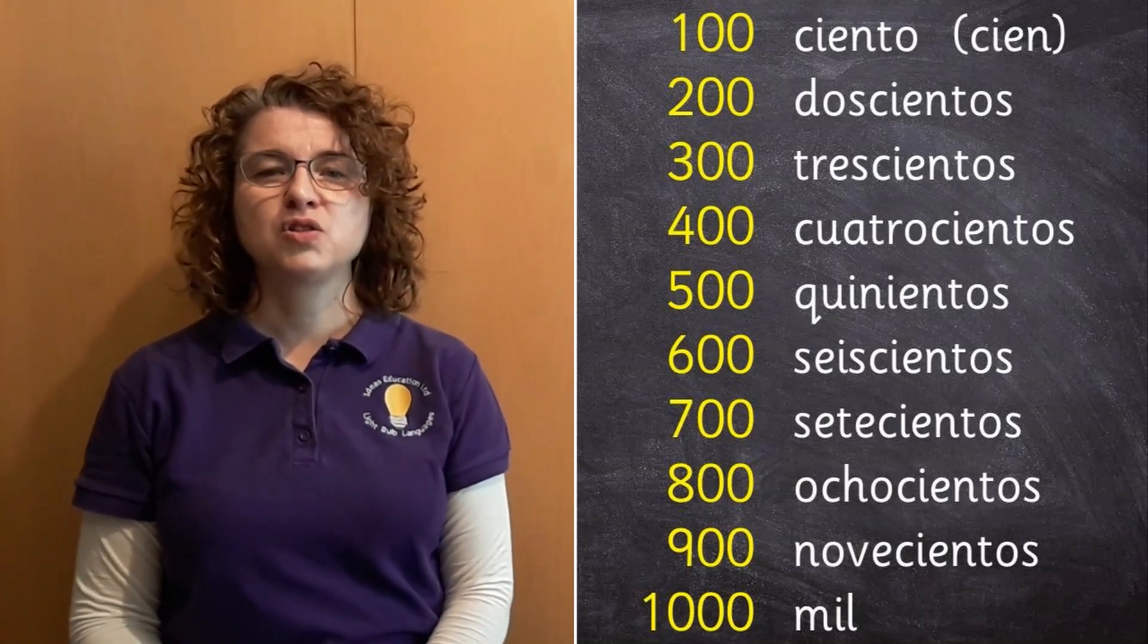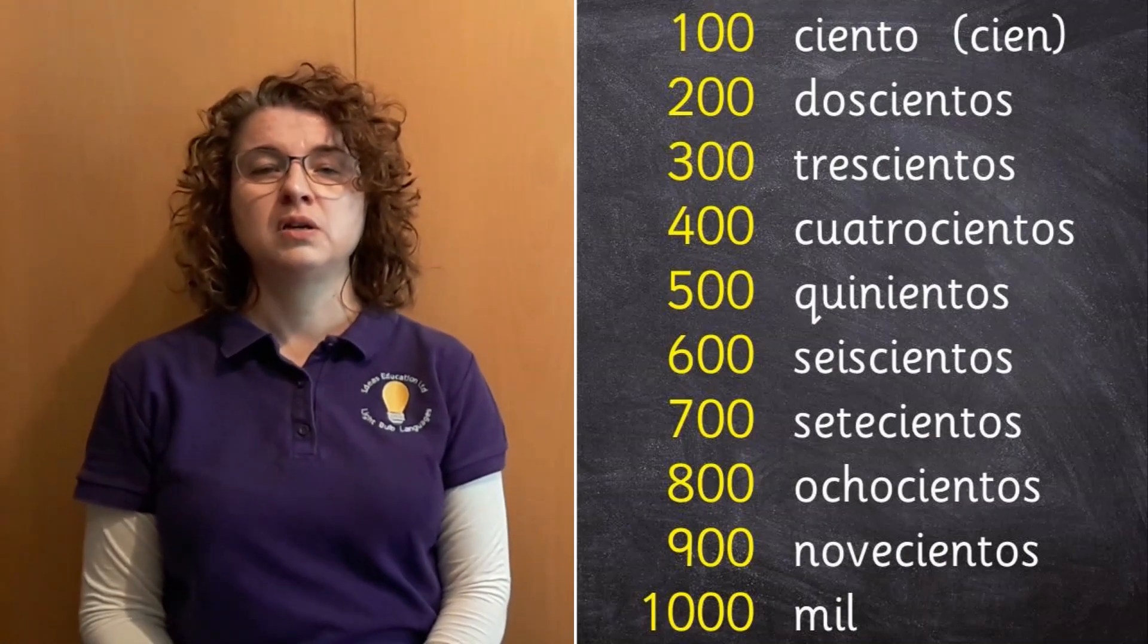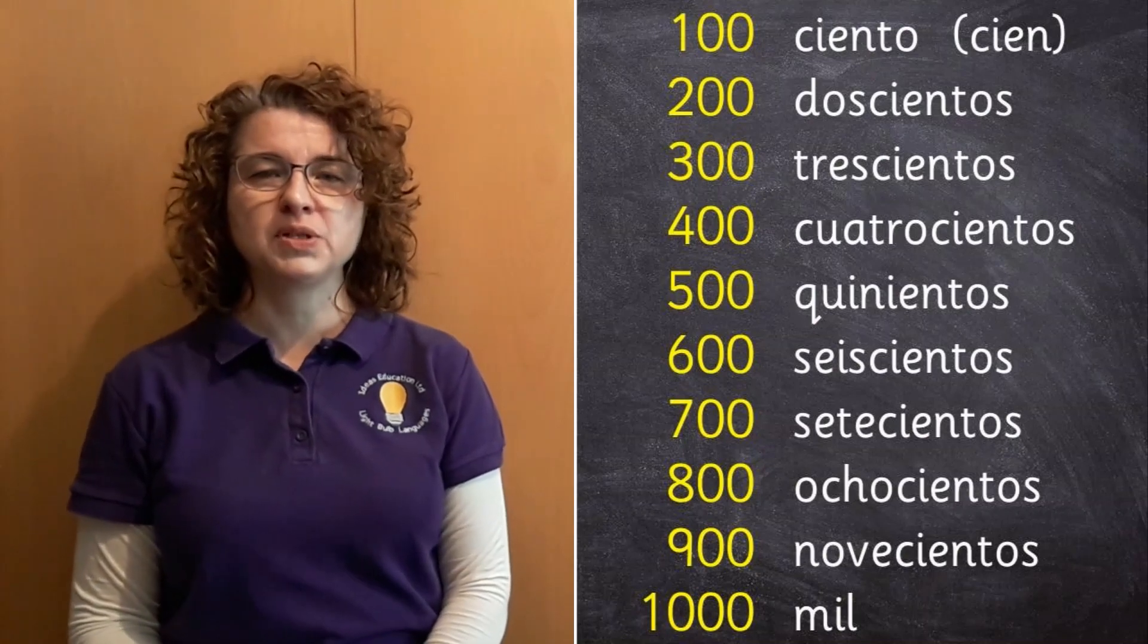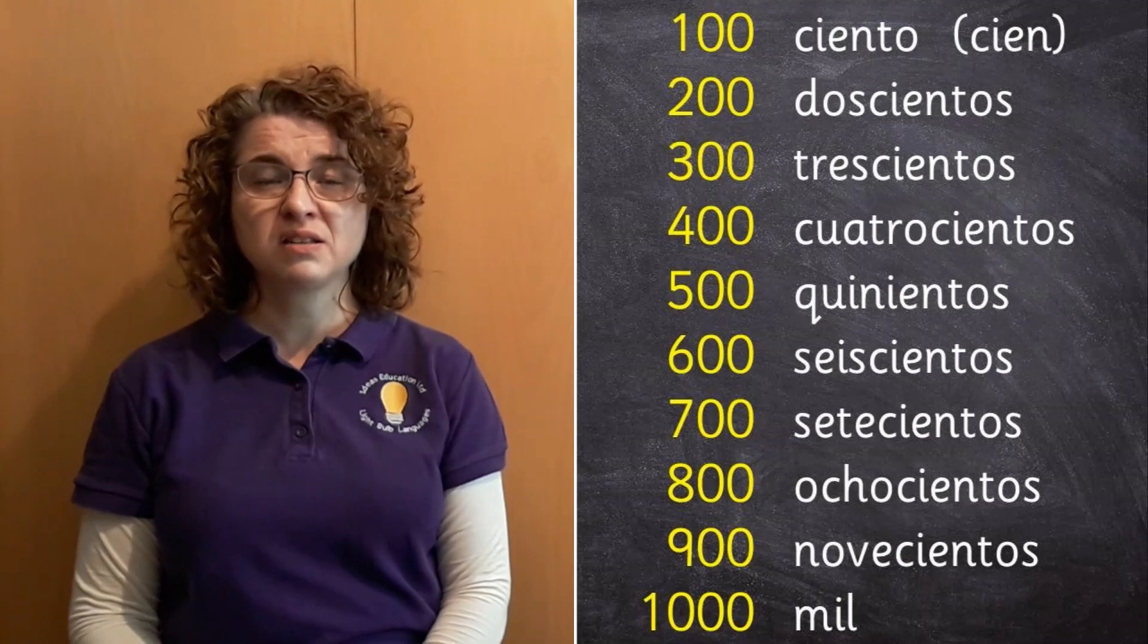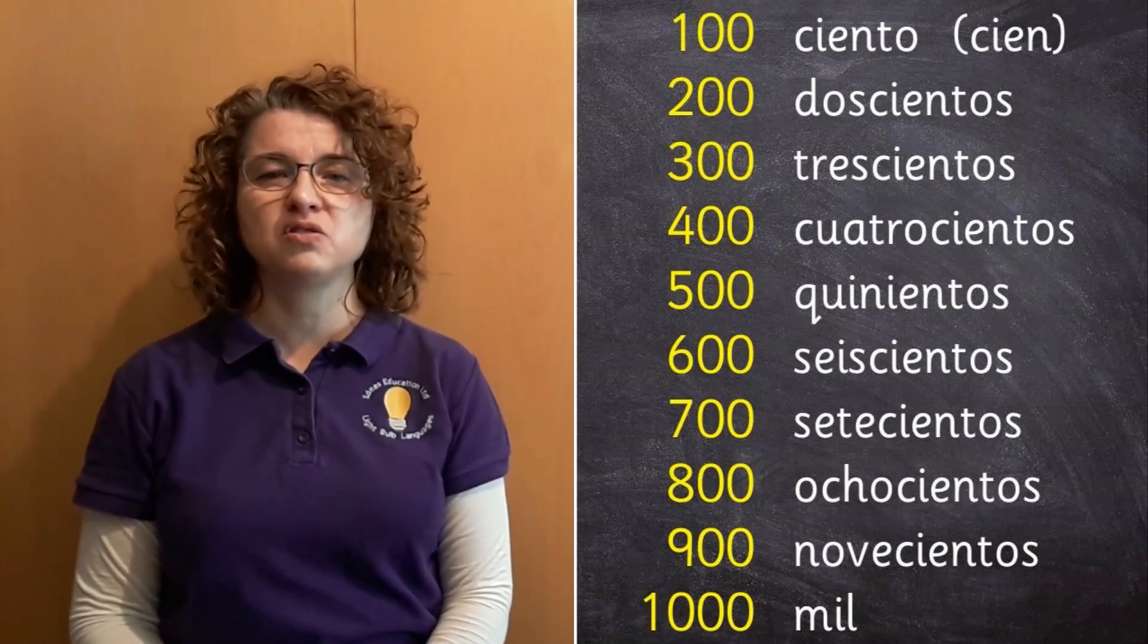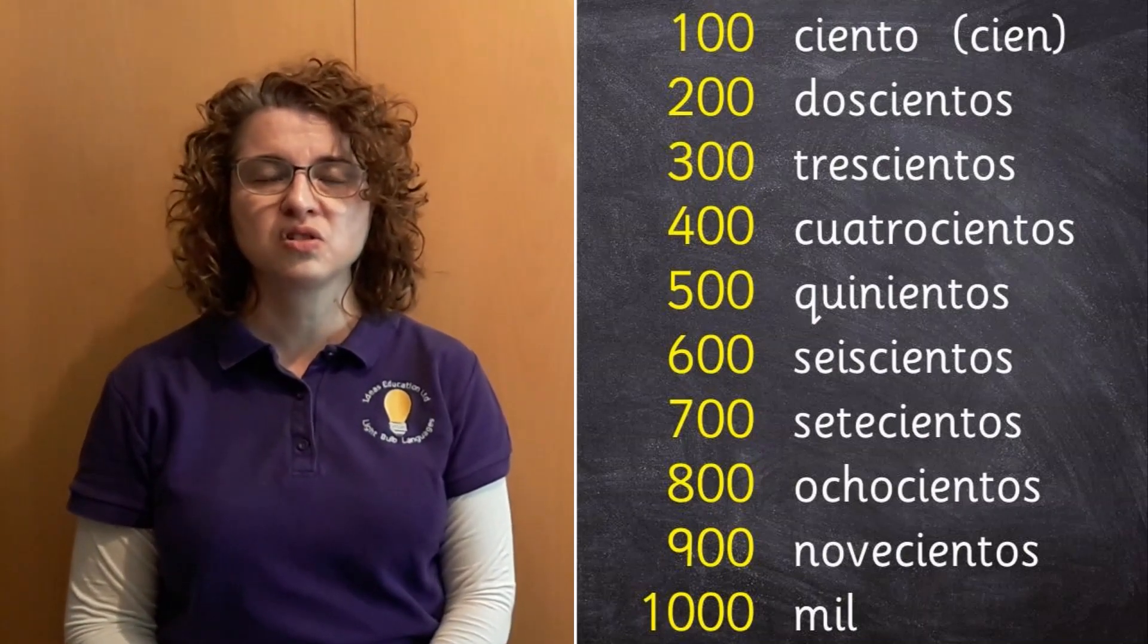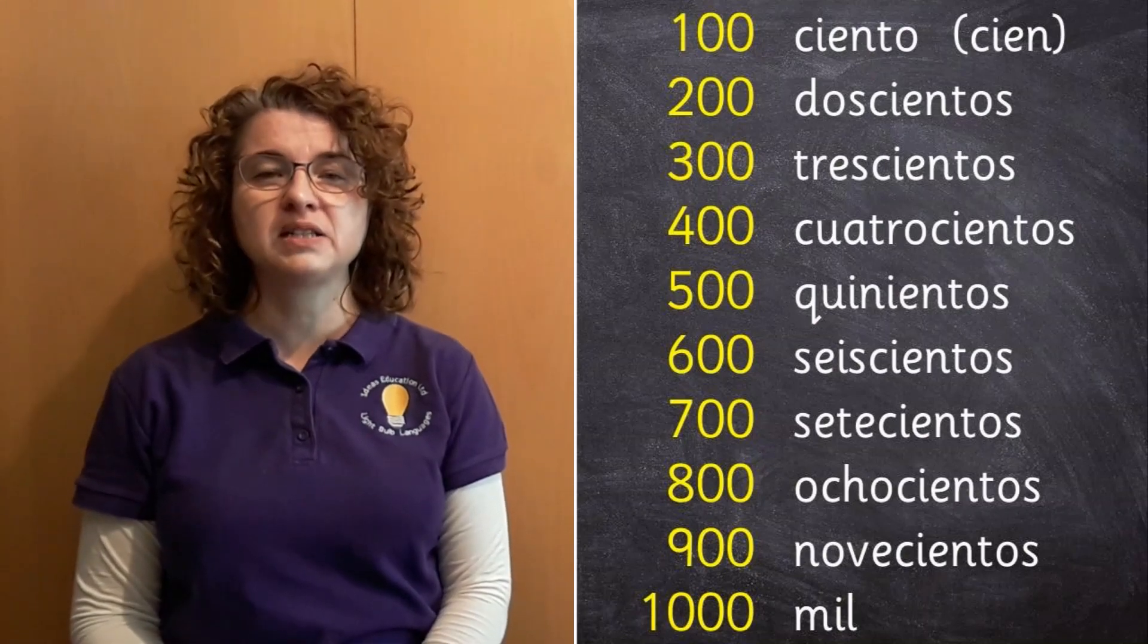Then to make two hundred, you take the number two, dos. Then you take the word for a hundred, ciento, and you put them together. But because there's two hundreds, we need to put an s on the end. So two hundred is dos cientos, dos cientos. Let's have a go at saying all the others as well. Ready to say them after me?